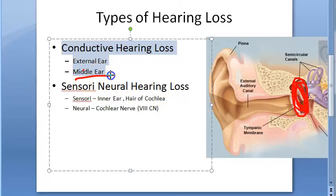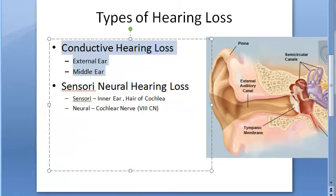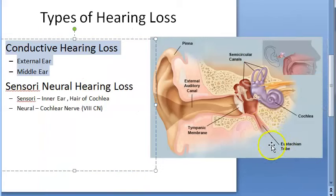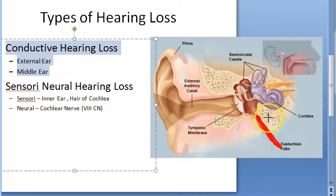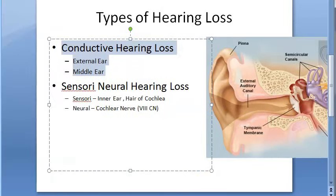Infection can cause fluid accumulation in the middle ear — otitis media — which also causes conductive hearing loss. If the Eustachian tube is blocked, that too can cause conductive hearing loss, because the fluid will develop in the middle ear. This is called glue ear, when the secretions accumulate there.